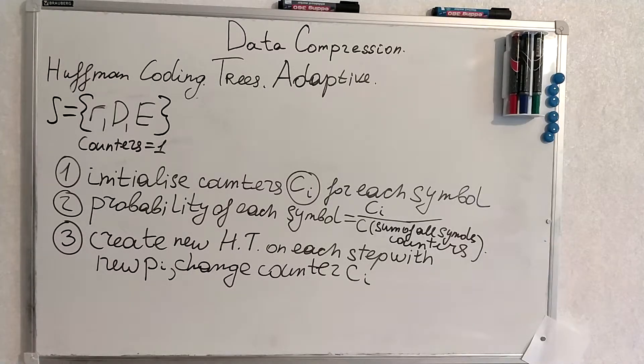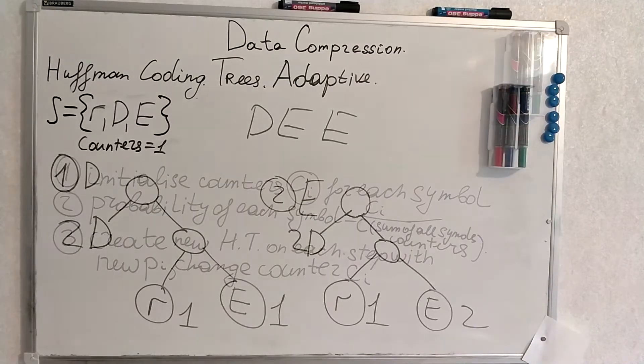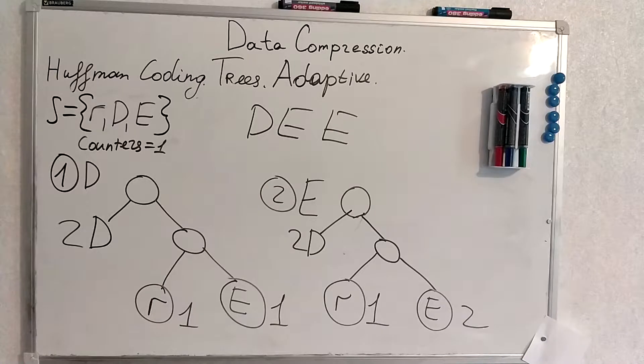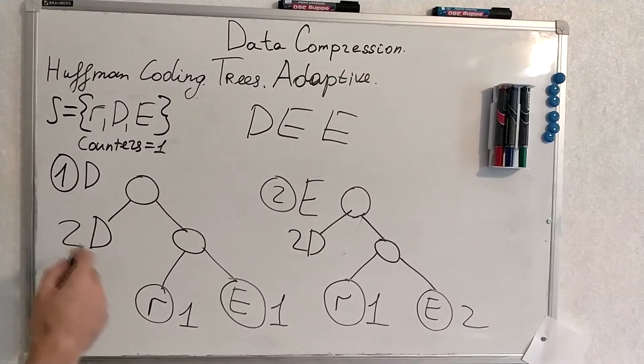I will show the example step by step and it will become clear if it's not yet. Let's see what's happening when we're trying to encode D E E. So first comes D and we build our Huffman code.